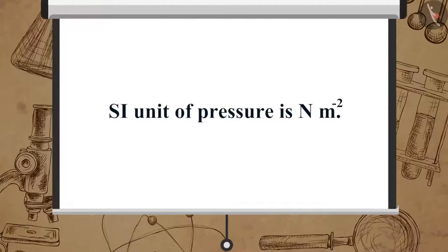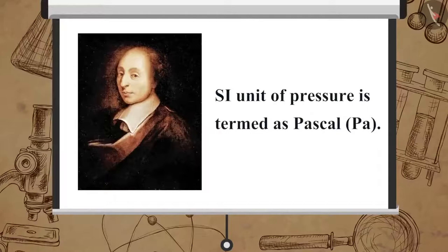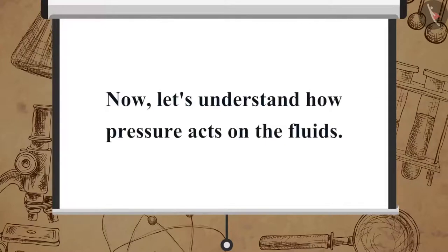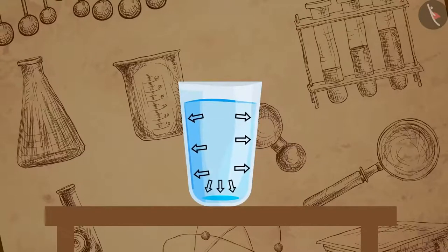Substituting the units of thrust and area, the SI unit of pressure is Newton per meter square. To honor the scientist Blaise Pascal, the SI unit of pressure is termed as Pascal, denoted as Pa.